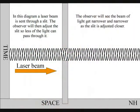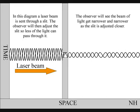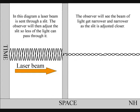In this diagram, a laser beam is sent through a slit. The observer will then adjust the slit so less light can pass through it. The observer will see the beam get narrower and narrower as the slit is adjusted closer.